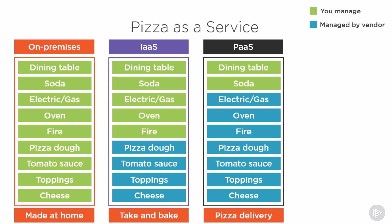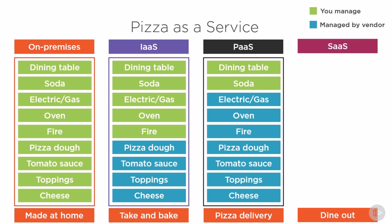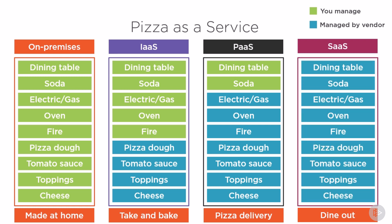And finally, Software as a Service is like dining out. You don't have to bring or make anything except your wallet, but everything is taken care of by the vendor — you simply pay the bill for what you consume. Hopefully this comparison with pizza allows you to better view the differences between the cloud computing service models.